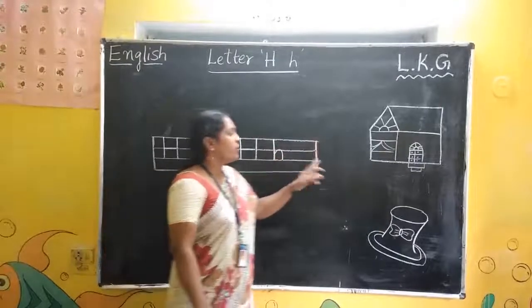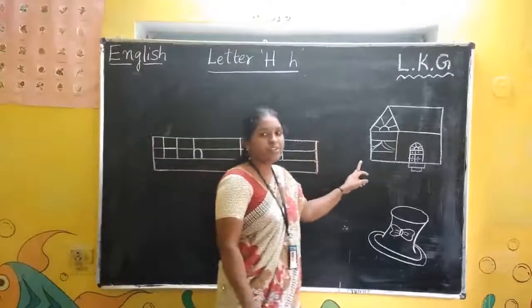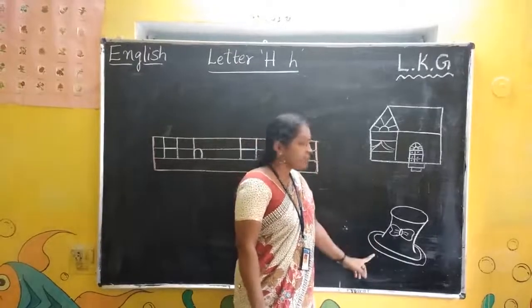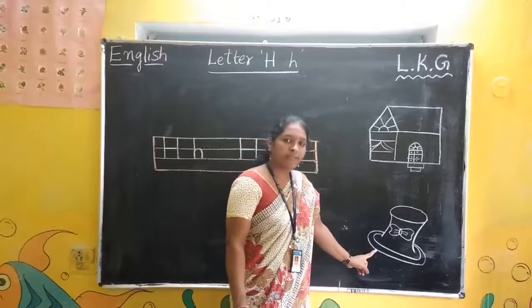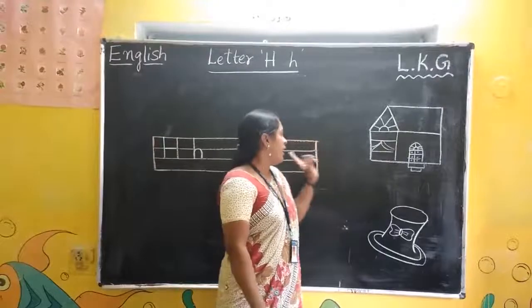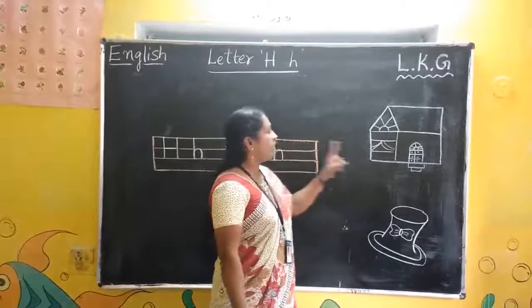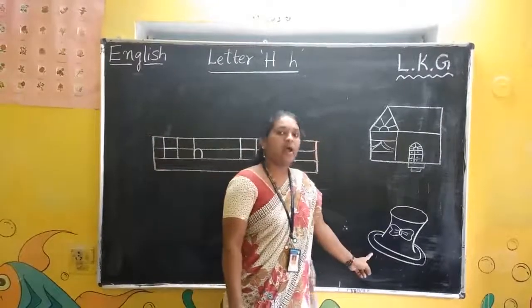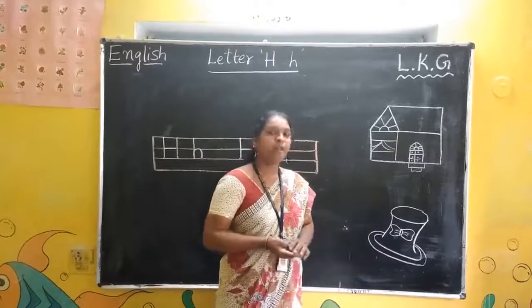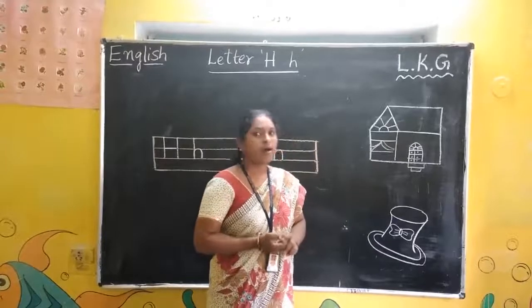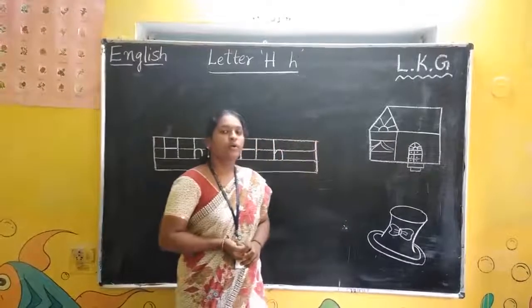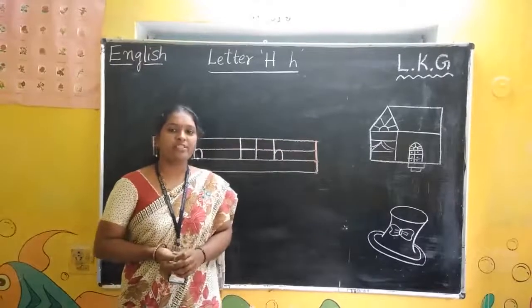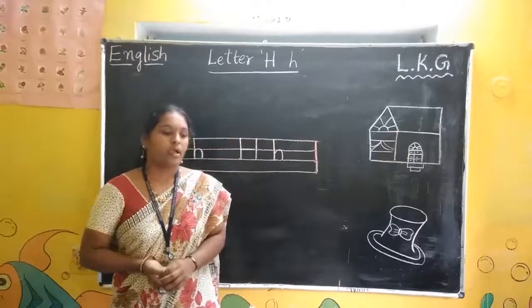What is this picture? House. This picture? Hat. H for house and H for hat. Ha ha ha. Did you understand how to write capital H and small H?